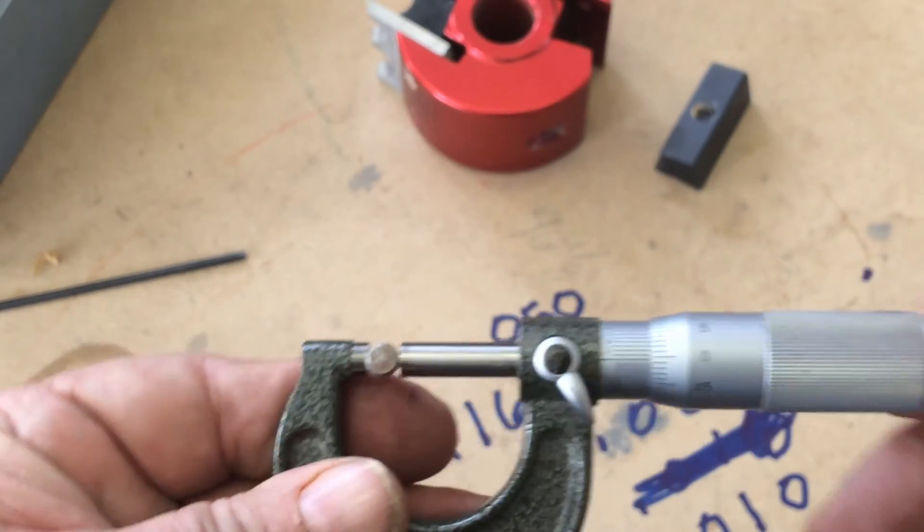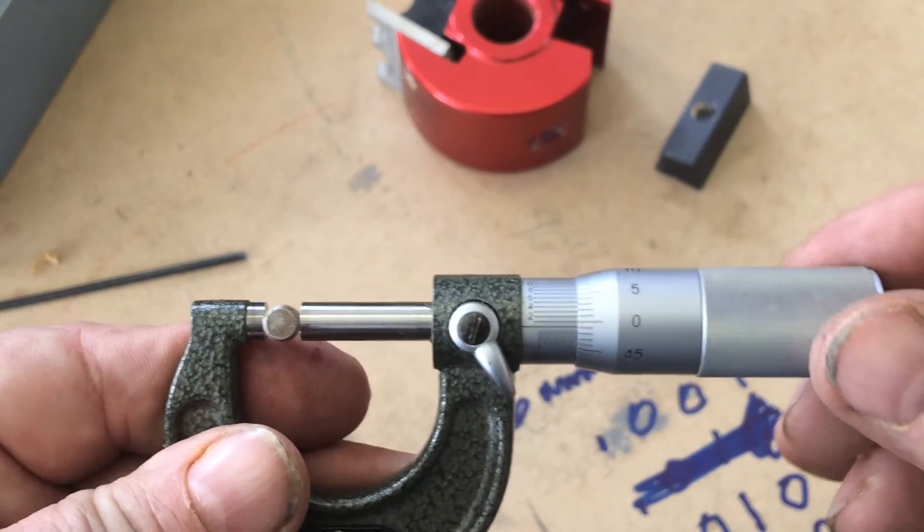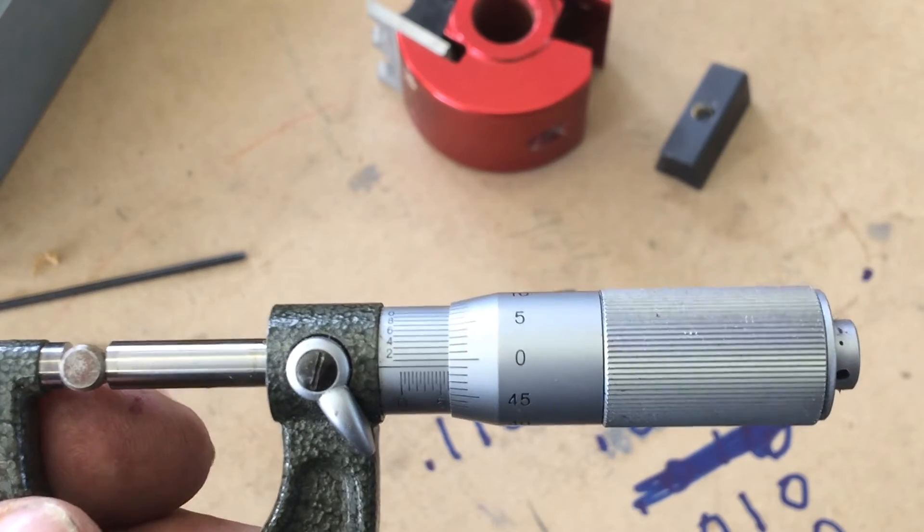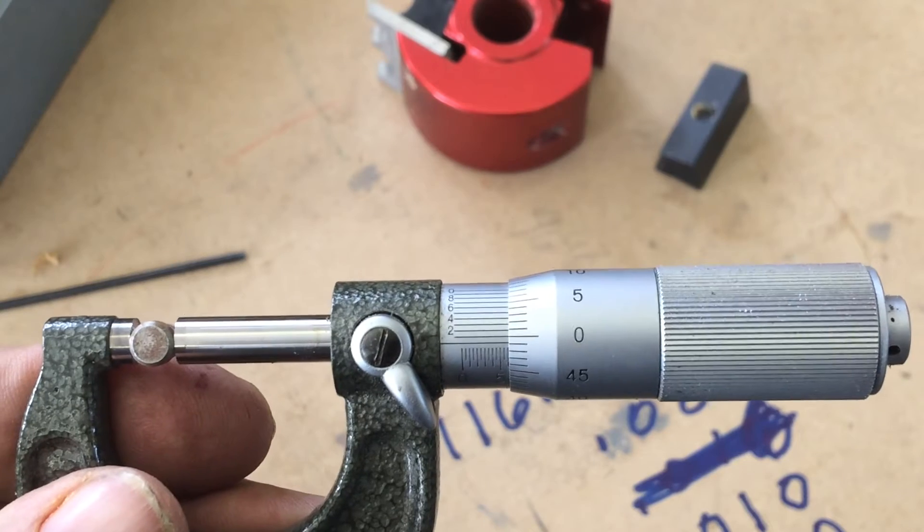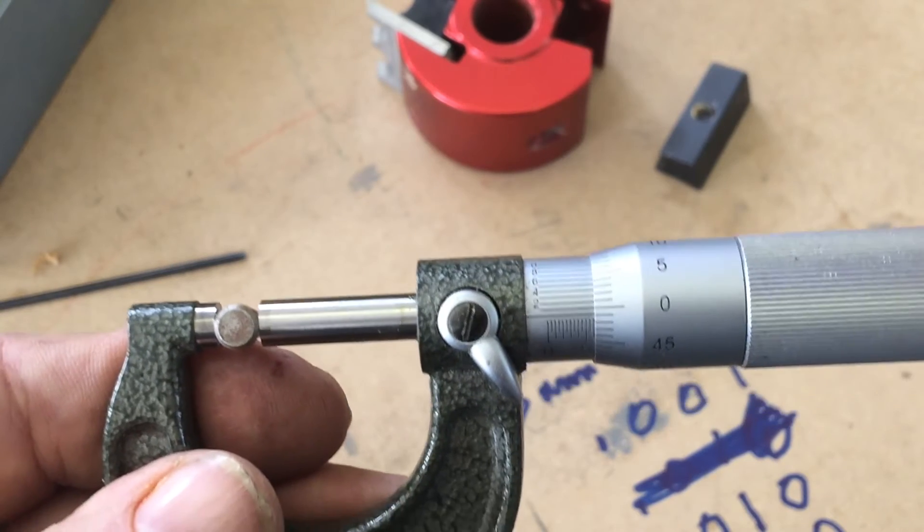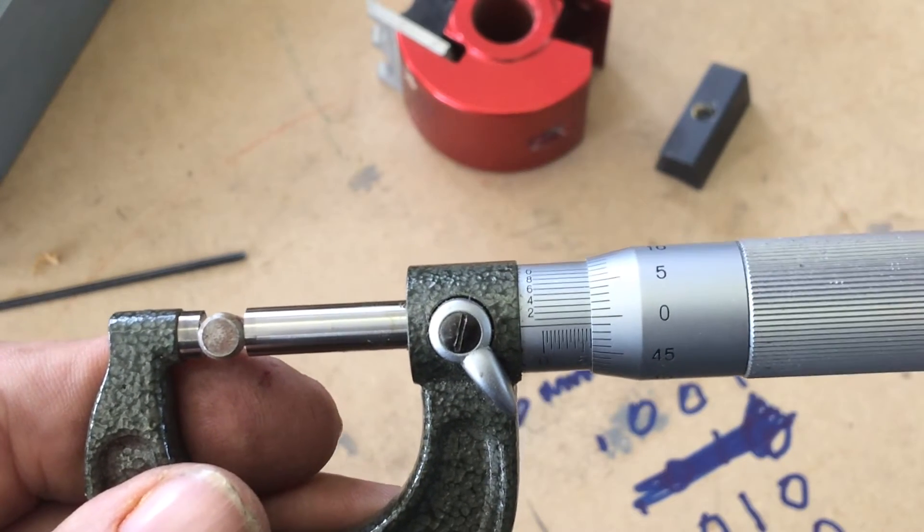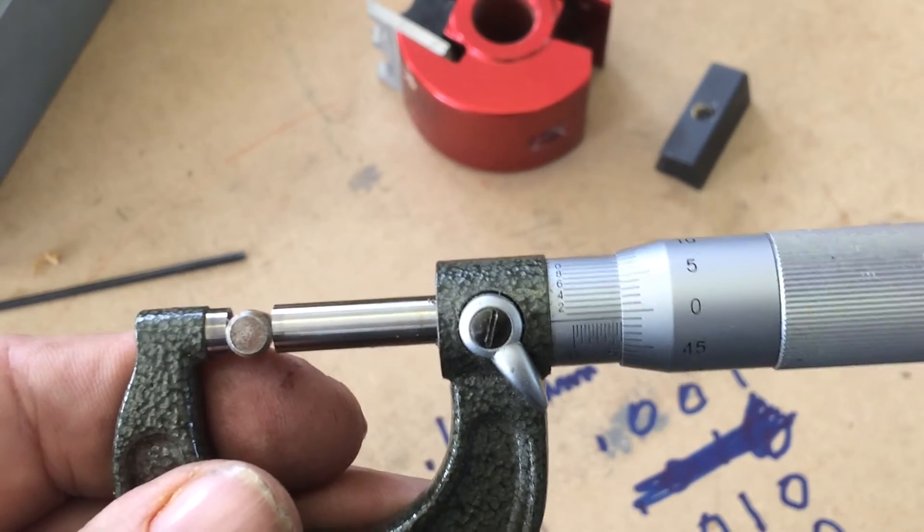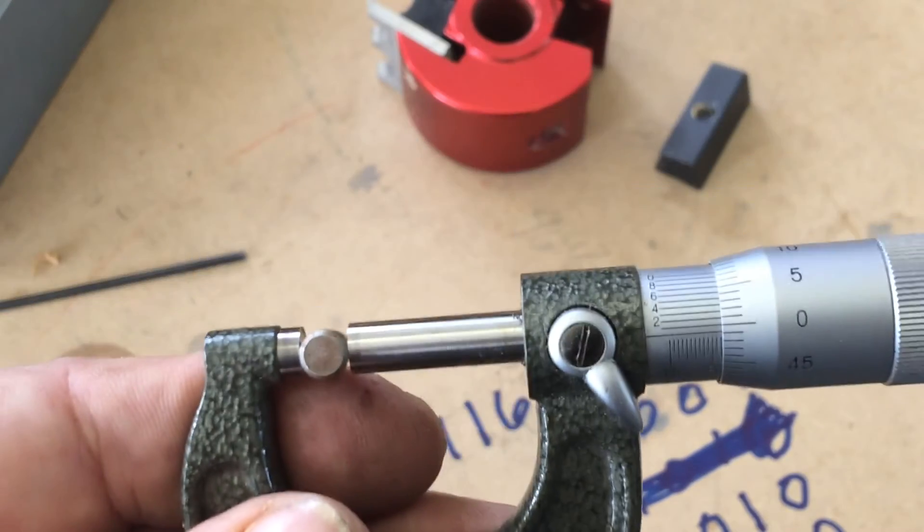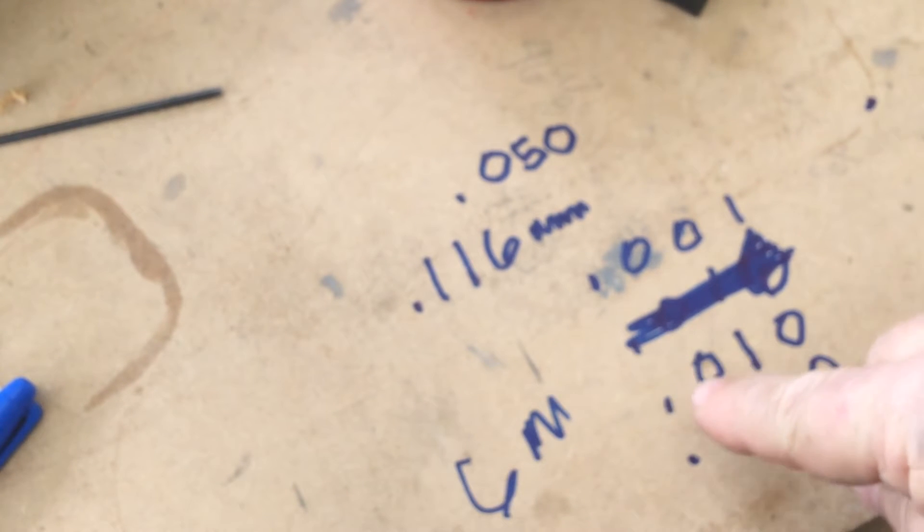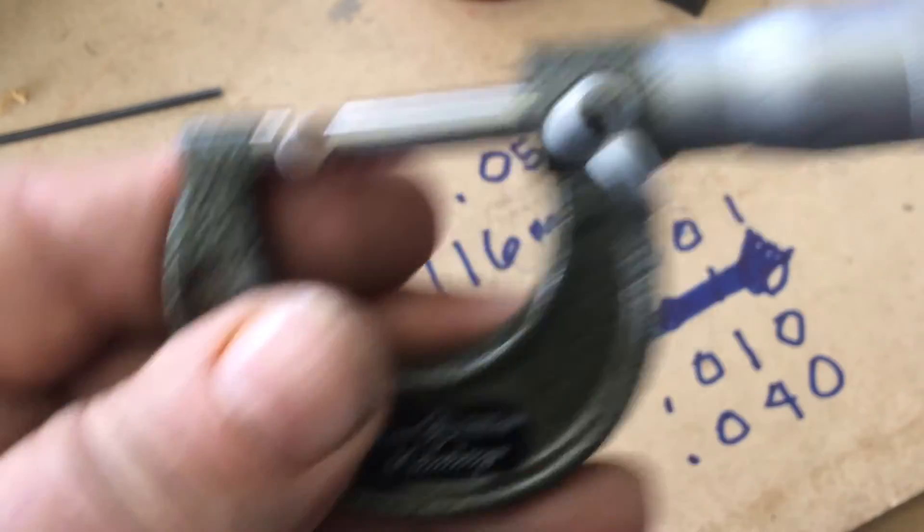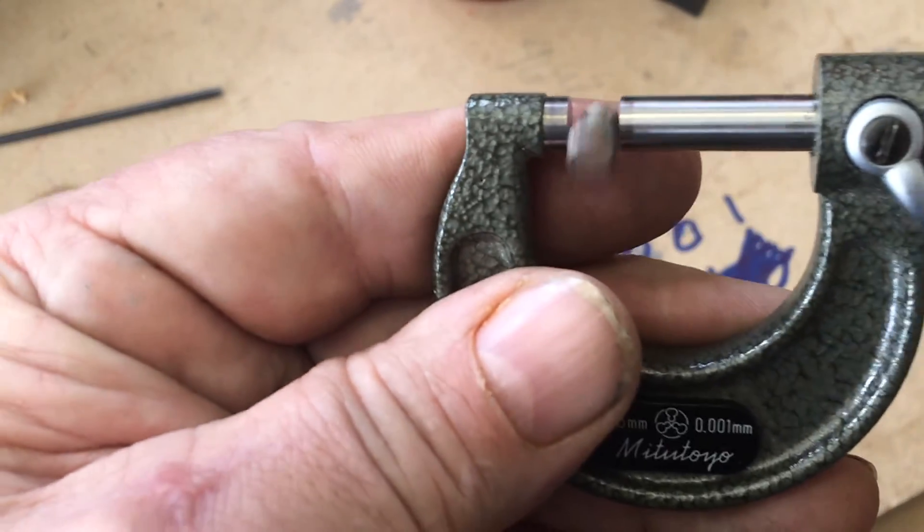As you can see, we've got it in there. We can see that it is 1 one-hundredth smaller. 1 one-hundredth of a millimeter smaller. So that would be 0.010 smaller than 6 millimeters.